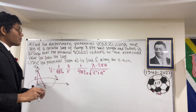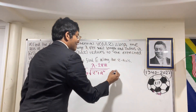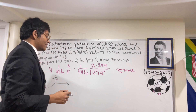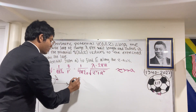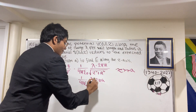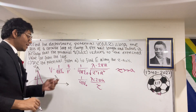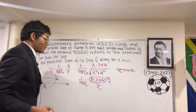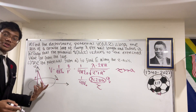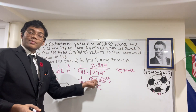Part b says show that the electric potential reduces to the expected value far from the loop. Far from the loop means z is significantly greater than a, in which case you can simply drop the a² term. You're left with (1/4π ε₀) × lambda × 2πa over z. That looks like kQ/r for a single point charge — so far away from the circular loop of charge, the electric potential looks just like that of a single charge with that total magnitude.